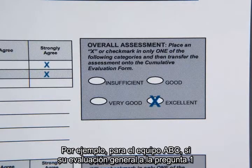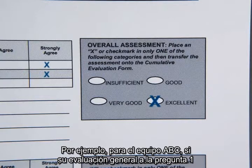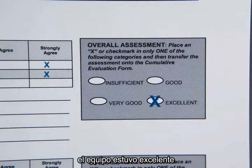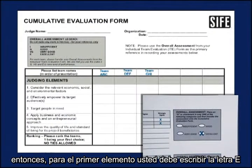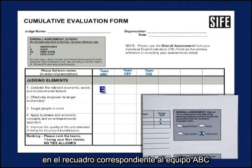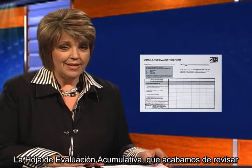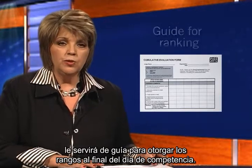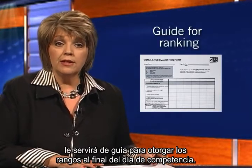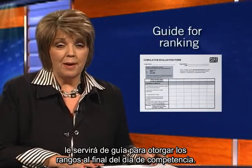For example, for team ABC, if your overall assessment of question one — considering the relevant economic, social, and environmental factors — was that the team did excellent, then for the first judging element you would enter an 'E' in the relevant box for team ABC. The cumulative evaluation form will then serve as your guide to ranking the teams at the conclusion of the competition day.